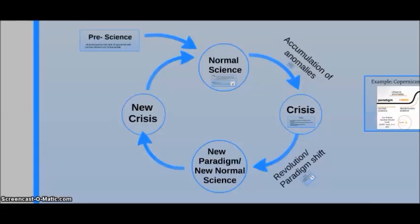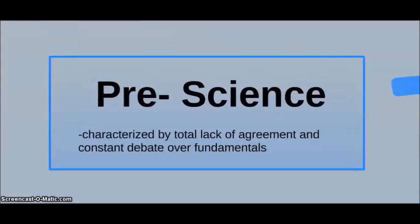This diagram shows how Kuhn proposed scientific progress occurs. First, there is pre-science, which is characterized by a total lack of agreement and constant debate over fundamentals, so that no work can be accomplished.